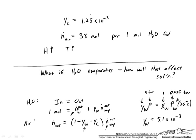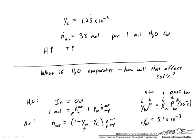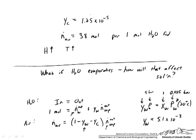If that assumption wasn't good, we could take all of our equations — our two balances, our balance on C, our Henry's law equation, our two flow balances, and our Raoult's law equation — giving us 5 equations in 5 unknowns, which we could solve without making those assumptions. But what we would see is that it really is a negligible difference from the 38 moles we calculated.